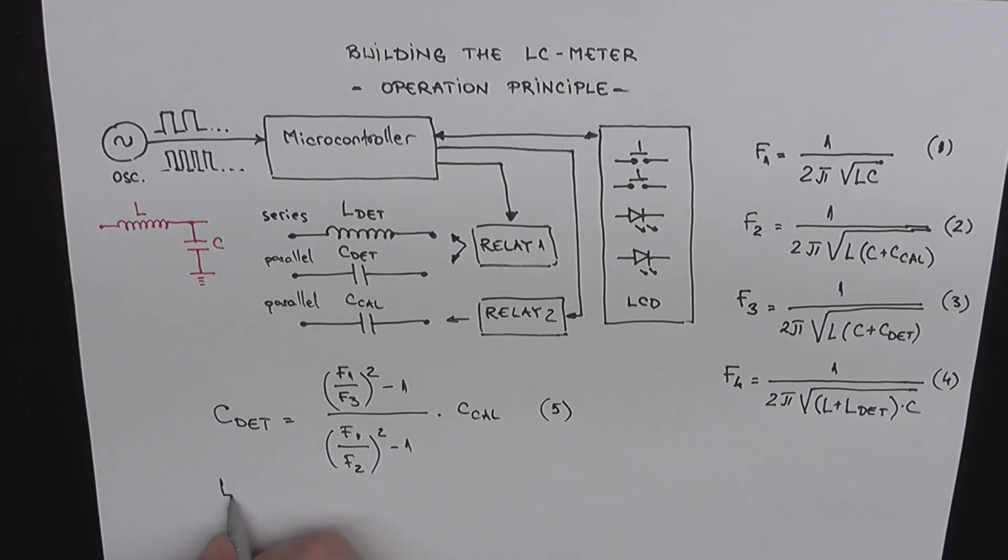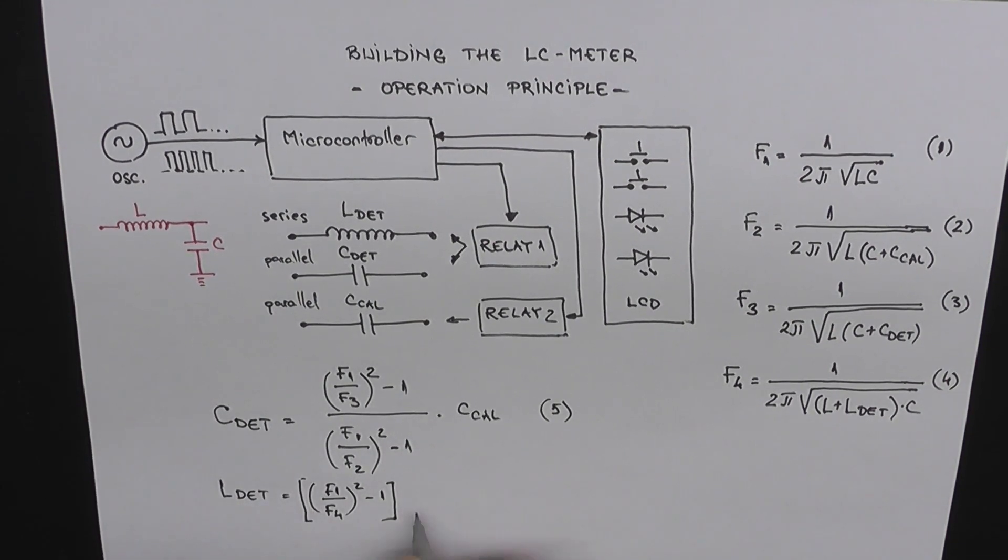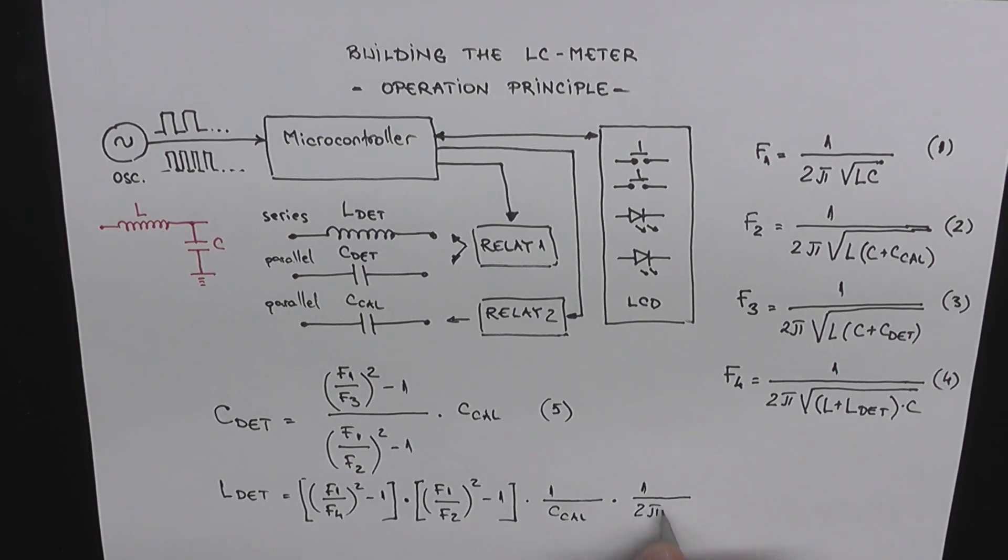And for the inductance, L to determine: F1 over F1 over F4 squared minus 1 multiplied with F1 over F2 squared minus 1 over F1 squared minus 1 multiplied with F2 squared minus 1 over F1 squared. Equation number 6.